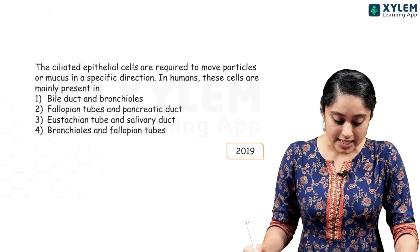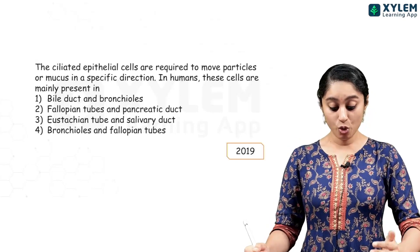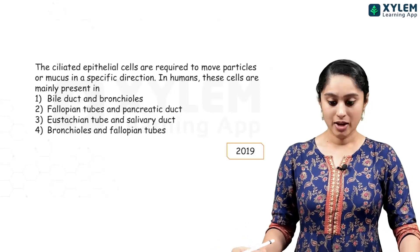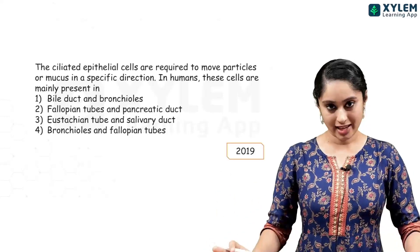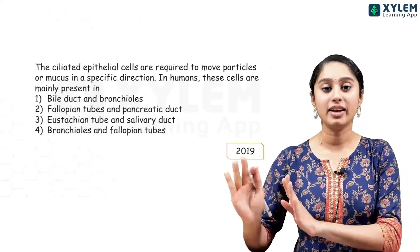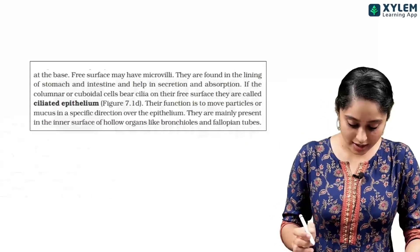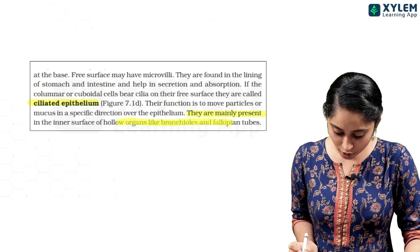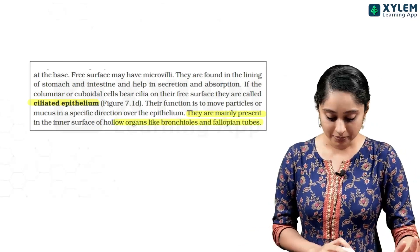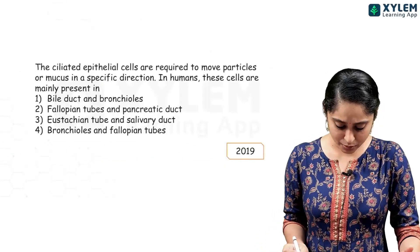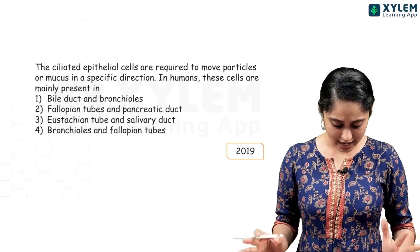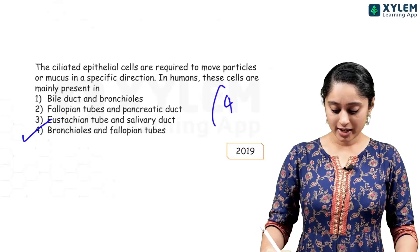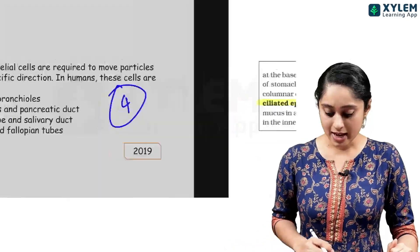A 2019 question: ciliated epithelium cells are required to move particles or mucus in a specific direction. In humans, these cells are mainly present in which region? From NCERT, ciliated epithelium is mainly present in bronchioles and fallopian tubes. The options include bile duct, bronchioles, fallopian tubes, and pancreatic duct. Option 4 — bronchioles and fallopian tubes — will be my answer.